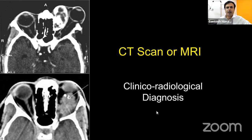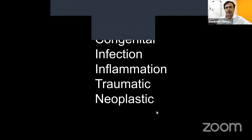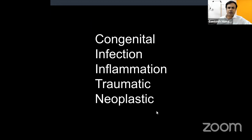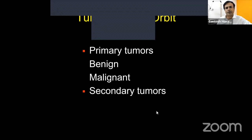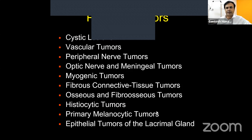After imaging, you're ready with a gross differential diagnosis — whether it's a congenital lesion, infection, inflammation, traumatic lesion, or neoplastic. When suspecting a tumor, you clinically determine whether it is a primary tumor or likely a secondary tumor, and if primary, whether it is benign or malignant.